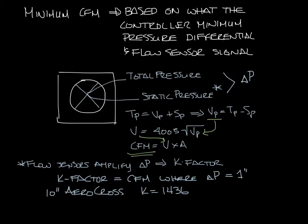Now that we know our K factor we can calculate our CFM using this equation: CFM is the K factor times delta P, where delta P is the signal going to the pressure transducer. We're going to use 0.01 inches as the minimum pressure differential that a typical pressure transducer can read. So that will give us the minimum that can go through a box for a typical VAV box controller.